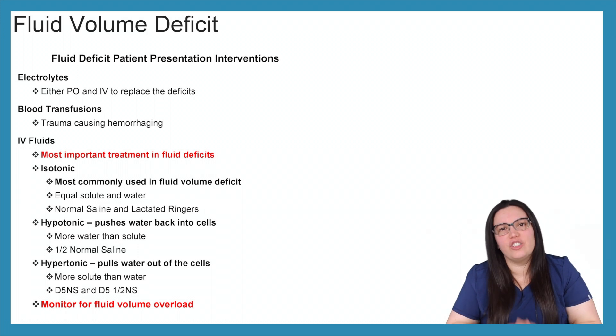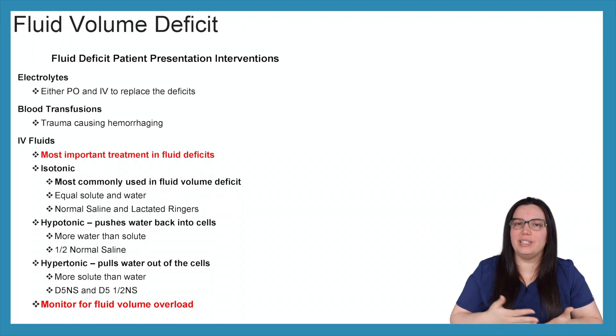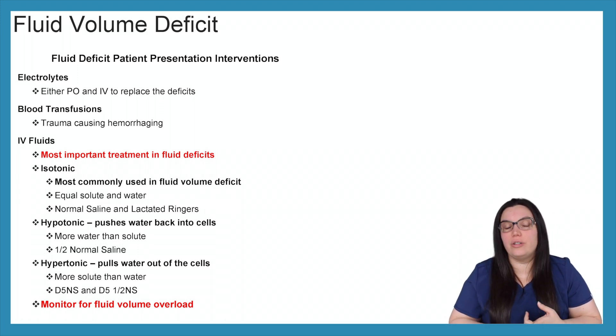So what kind of interventions are we looking at when we have a fluid deficit patient? Well, electrolytes could be one. We can either give them PO or IV if we are having replacement deficits, especially when we start replacing all of these fluids. Blood transfusions, trauma causing hemorrhaging. So if you've got somebody whose main cause of hypovolemia is blood, then you need to replace blood with blood. You can give isotonic solutions, but it really is only going to take you so far. Ultimately, you're going to have to give some kind of blood product.